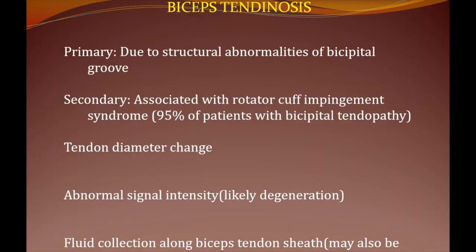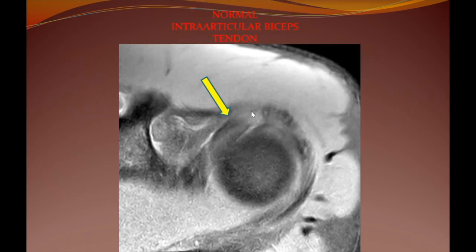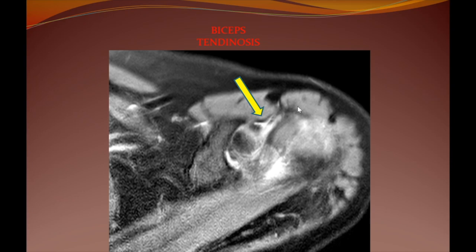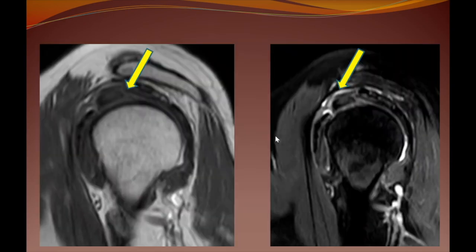Biceps tendinosis is inflammation of the biceps tendon. It may be primarily due to structural abnormalities of the bicipital groove or secondary to rotator cuff impingement. What we see is change in tendon diameter, abnormal signal, whether tendinosis or an associated tear with fluid signal within the biceps, and fluid along the biceps tendon sheath. A normal biceps tendon is shown in axial view, contrasted with abnormal signal in the biceps tendon suggestive of tendinosis, and an extremely thickened tendon with intrasubstance signal changes.